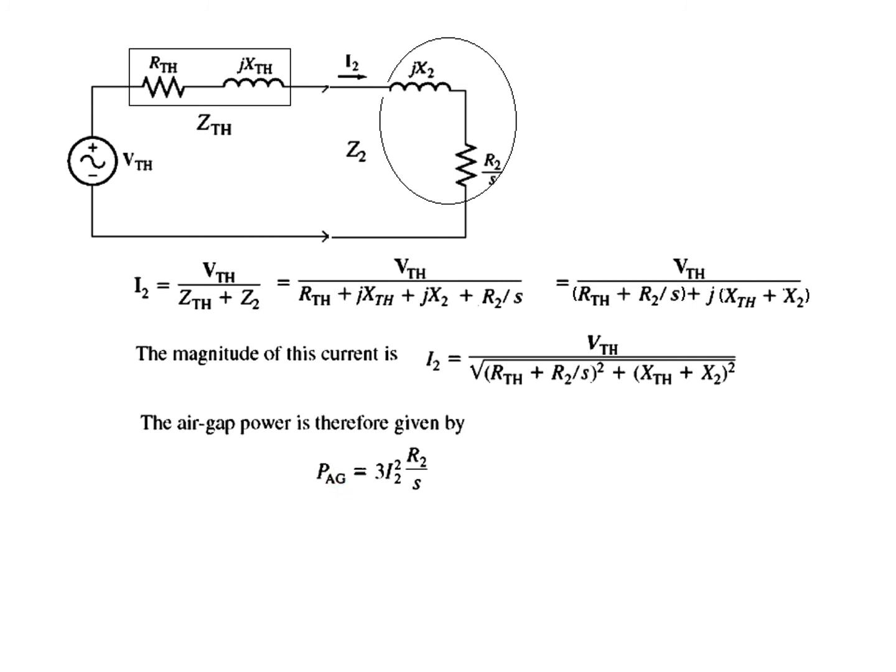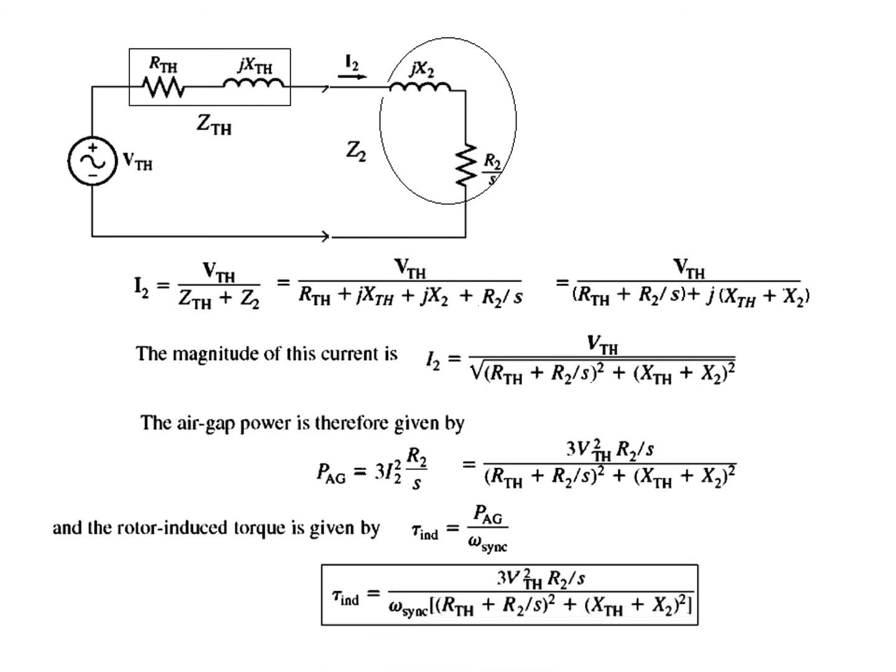Now we can calculate P_ag by putting the value of I_2. So putting in the value we get this equation. So we have calculated P_ag. Now we can calculate the T_induced by plugging in the value of P_ag. So T_induced will be P_ag divided by omega_sync. So this is one of the equations that we have to use in doing our calculations.